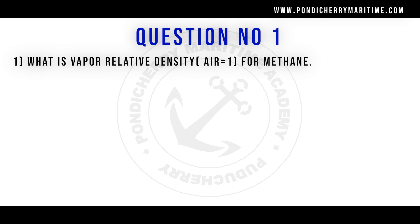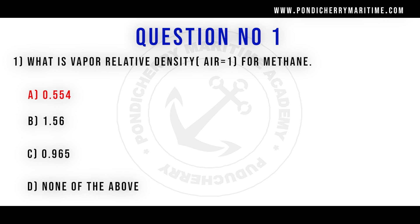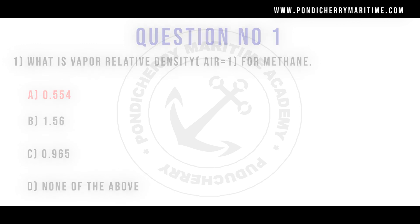What is the vapor relative density, air equal to 1, for methane? The options are: A. 0.554, B. 1.56, C. 0.965, D. None of the above. Correct answer is option A: 0.554.